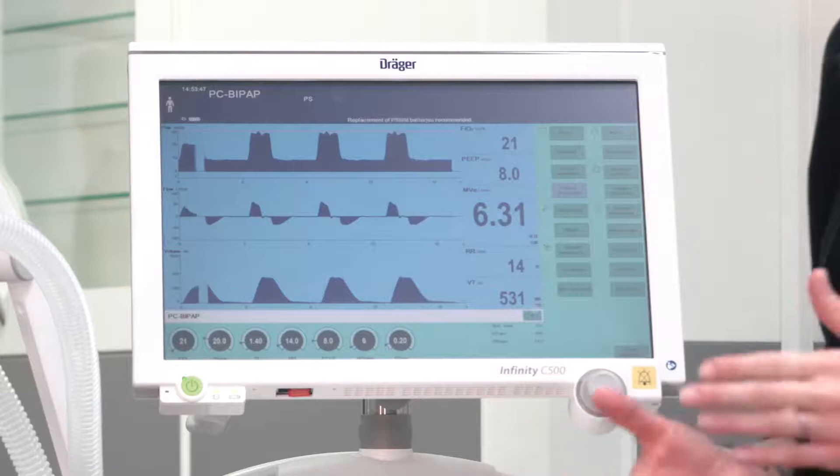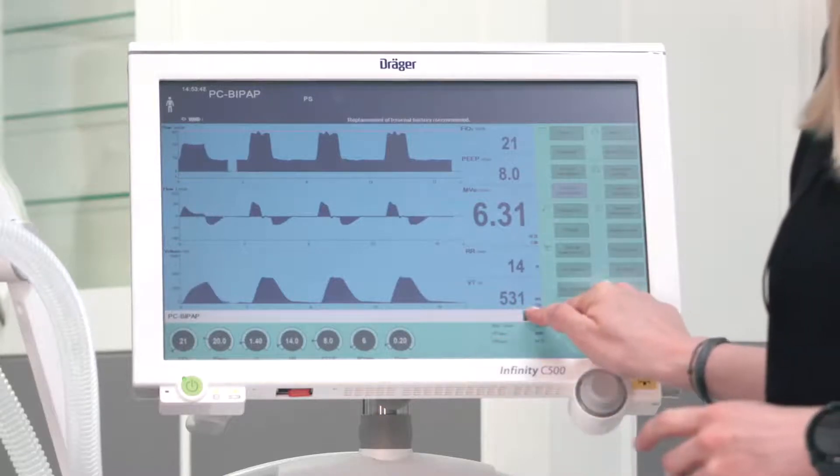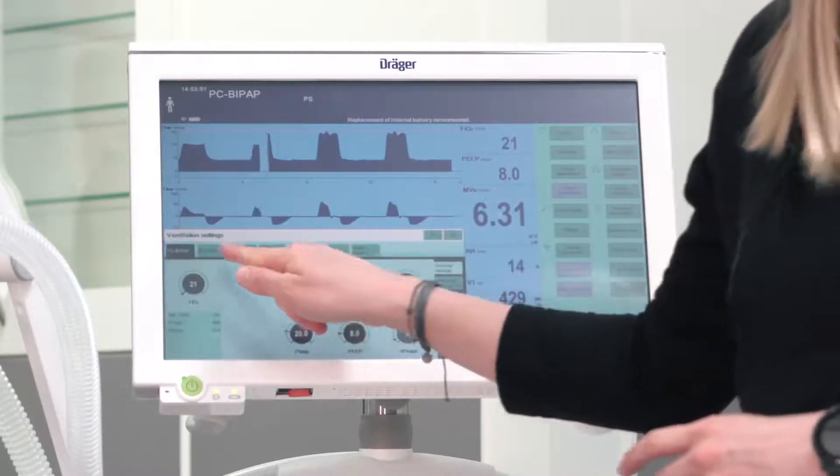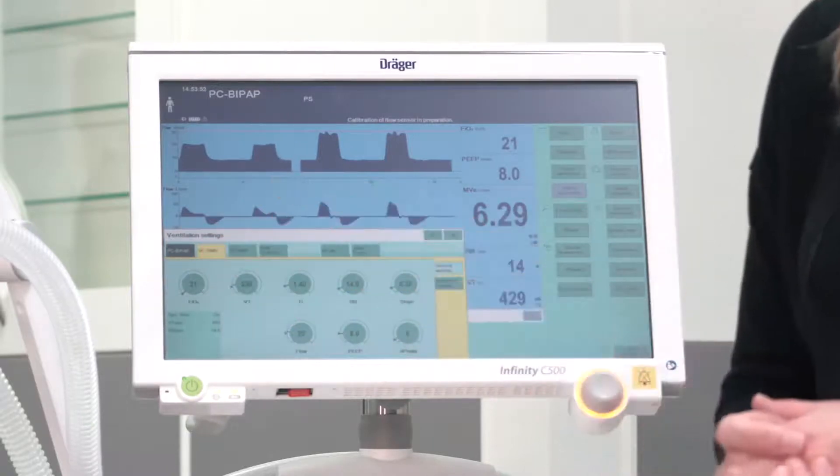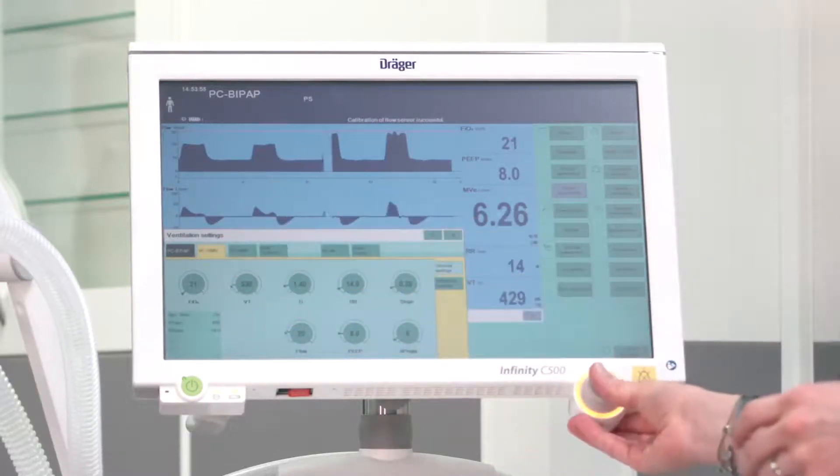If you want to change to a different ventilation mode, use the quick access to ventilation settings, select the respective ventilation mode and confirm with the rotary knob.